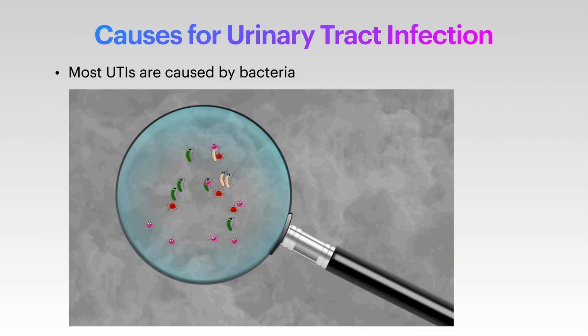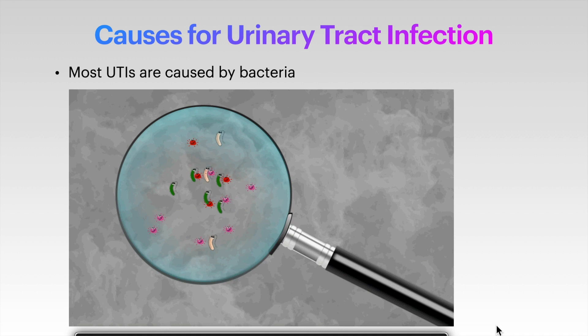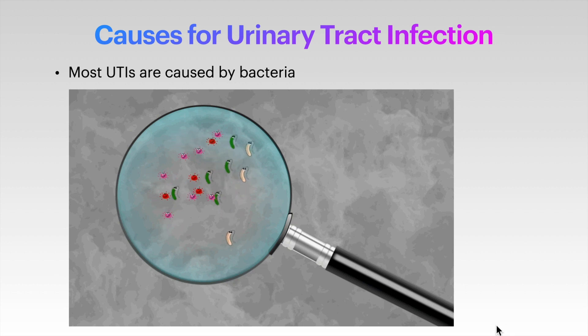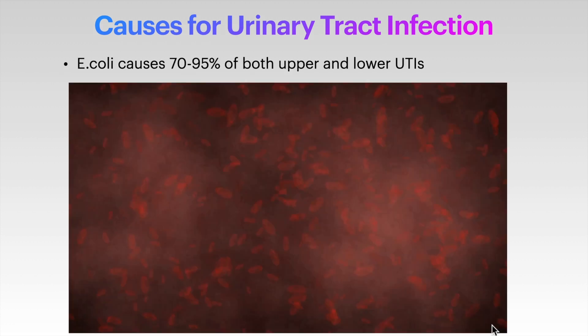Urinary tract infections typically occur when bacteria enter the urinary tract through the urethra and begin to multiply in the bladder. Although our body is able to fight against these bacteria, when this defense fails, bacteria grow into a full-blown infection. The most common cause of UTI is E. coli.